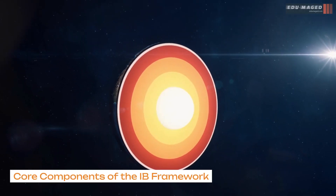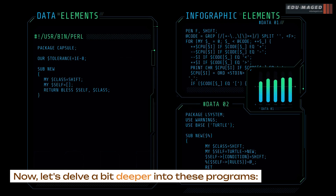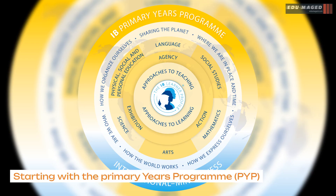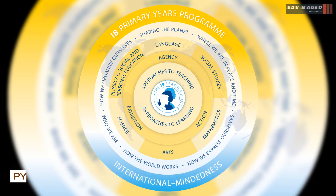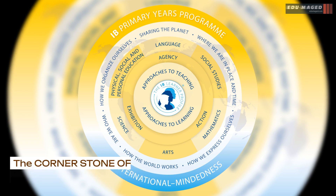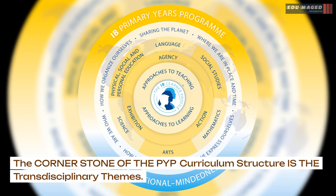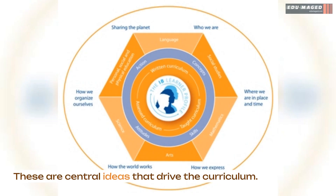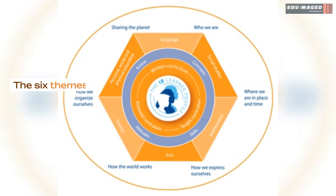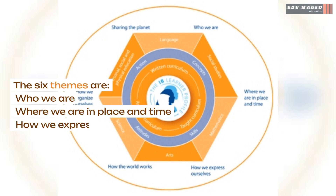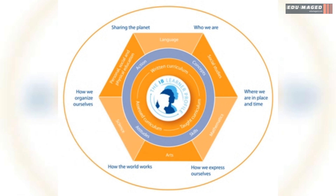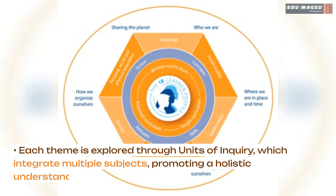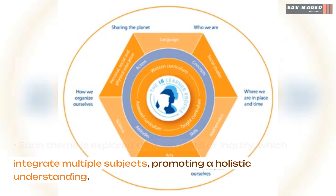Starting with the Primary Years Programme, PYP, offered for ages 3 to 12 years. The cornerstone of the PYP curriculum structure is the transdisciplinary themes — central ideas that drive the curriculum. The six themes are: who we are; where we are in place and time; how we express ourselves; how the world works; how we organize ourselves; and sharing the planet. Each theme is explored through units of inquiry which integrate multiple subjects, promoting a holistic understanding.